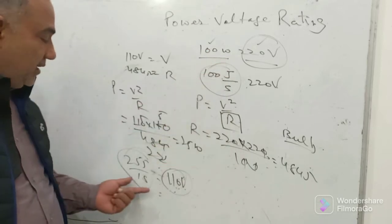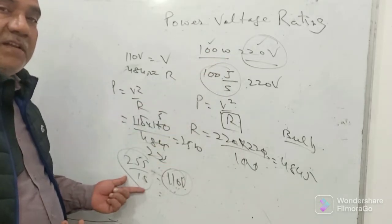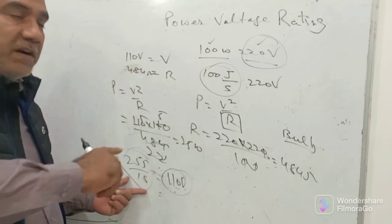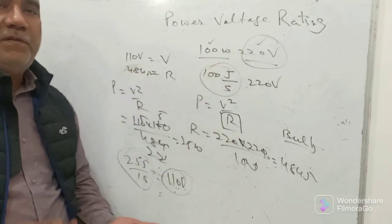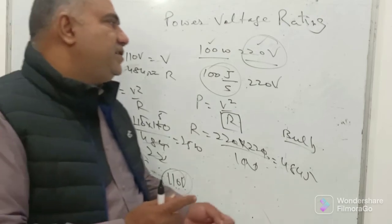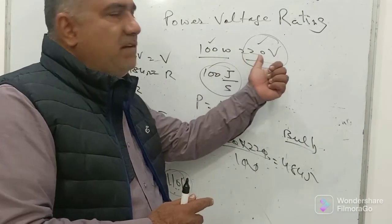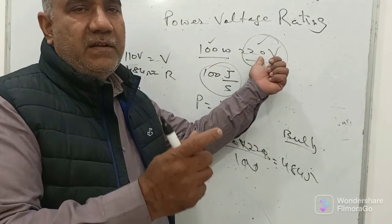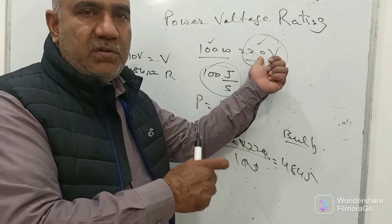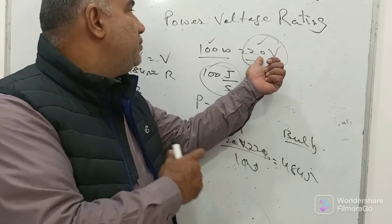So it is power voltage rating - specifying both is mandatory. You cannot just say this bulb is of 100 watt, because that could also be 25 watt. What is making it 100 watt or 25 watt? How much voltage you operate it at. So it is mandatory for us to mention both power as well as voltage that we are operating or applying across this device. That was all about power voltage rating.